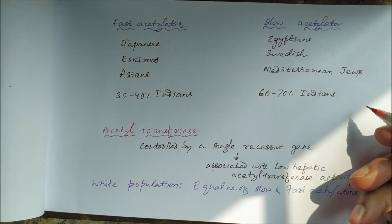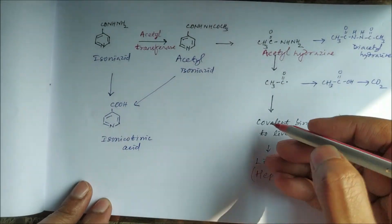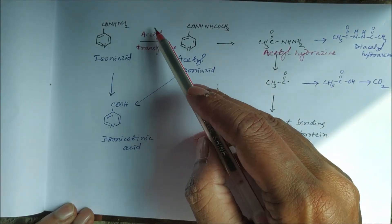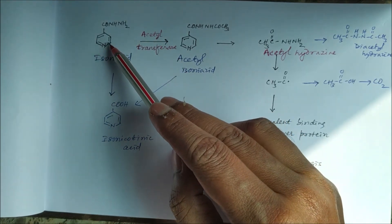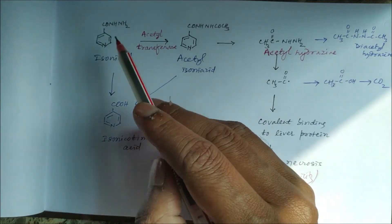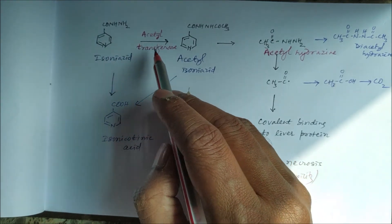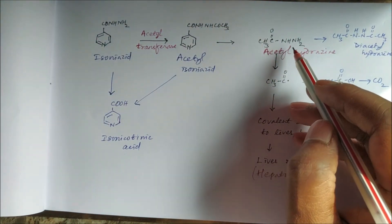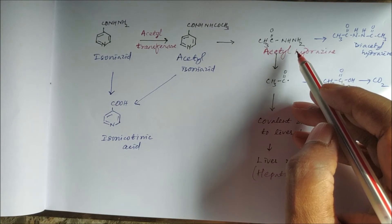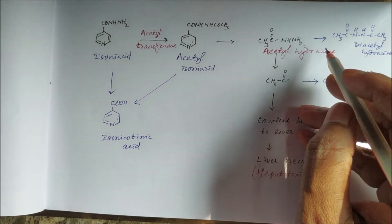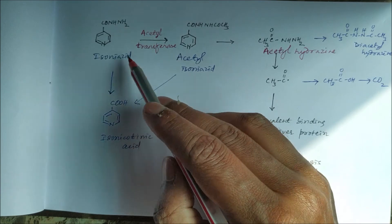Looking at isoniazid metabolism: if a person is a slow acetylator, acetyltransferase activity is less, leading to more accumulation of isoniazid itself, and the toxicity will be that of isoniazid. If a person is a fast acetylator, high acetyltransferase activity leads to greater production and accumulation of the metabolite acetylhydrazine, which is found to be more in fast acetylators.